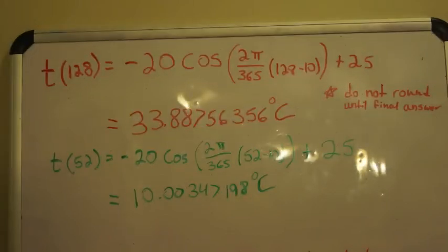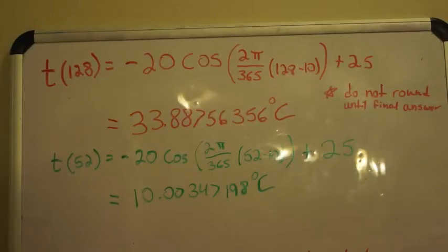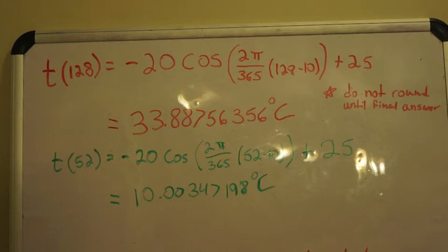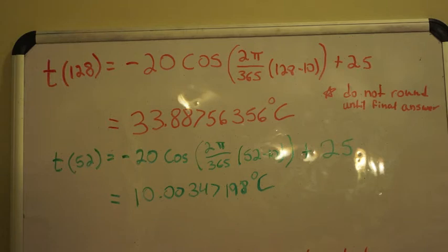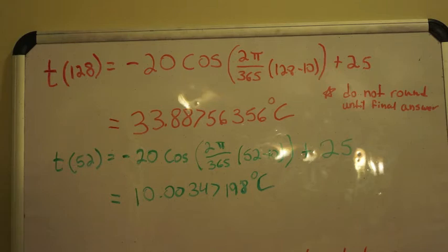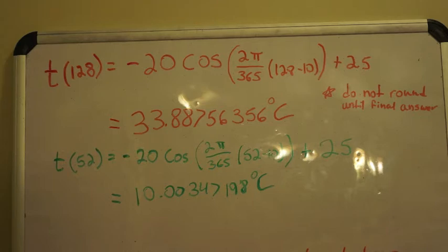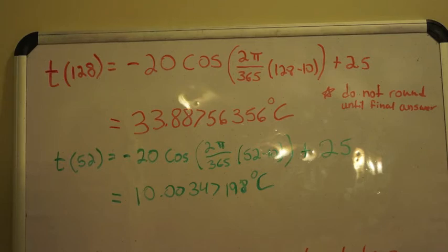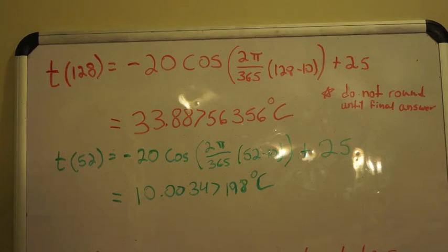Now we must solve for our y values to use in our AROC equation. Take the equation given and substitute the number of days for d. For example, to find t(128), simply plug in 128 for d and solve using your calculator. Repeat the process for t(52). Do not round these values to ensure the most accurate final answer. If possible, store these values in your calculator. The value for t(128) should be around 33.9 degrees Celsius, and t(52) should be around 10 degrees Celsius.